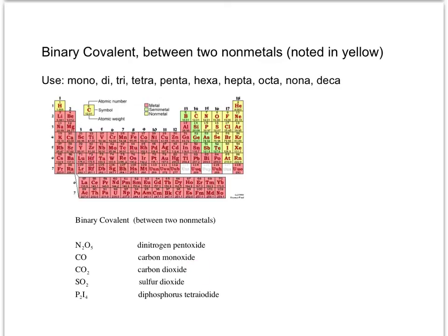There is no criss-cross relationship for covalent compounds — something similar is going on with oxidation numbers, but that's a topic for later. Basically, you either have a formula and want the name, or you have the name and want to deduce the formula.